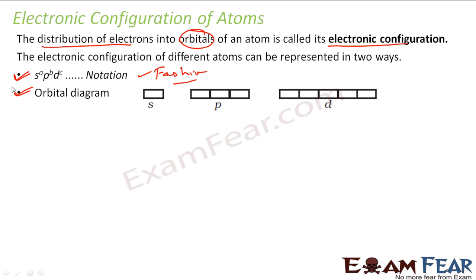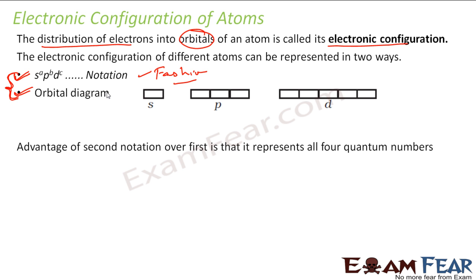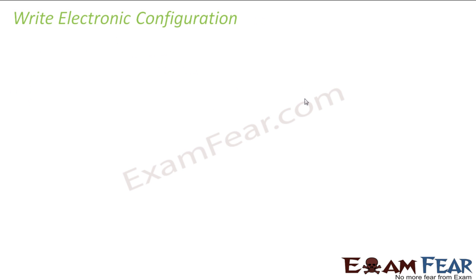We'll understand both these representations — both are the same, representing the same data, just in different ways. However, the orbital diagram has an advantage over the SPDF notation because it represents all quantum numbers. Looking at the orbital diagram, you can tell the quantum number for all the electrons.